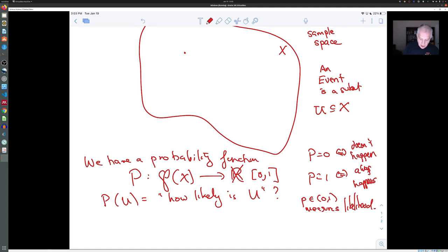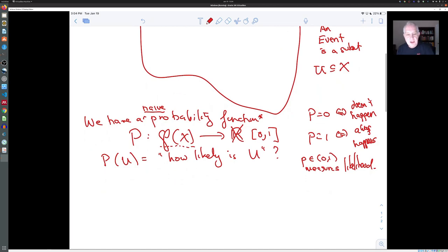And I should make one other remark, which is that this is not really true. The function, if X is complicated, like if X is the real numbers, it's not really a function from the power set of X. So this is what you might call a naive probability function. And for those of you that are experts or have studied measure theory, you'll know that this is not true. But to all intents and purposes, it's going to work for us.